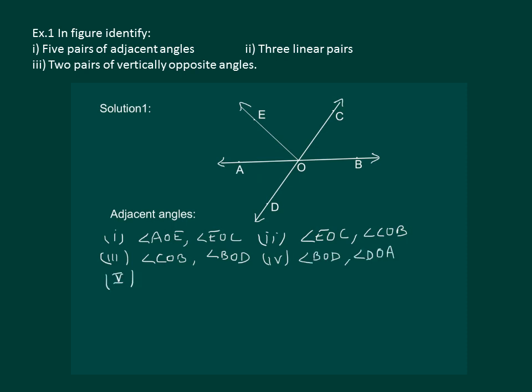Now, to find the fifth one, we can consider any one line and angle AOC and angle COB are adjacent angles, or we can consider DOC line and then angle DOE and EOC are also adjacent angles. So that means we can have more than five adjacent angles.